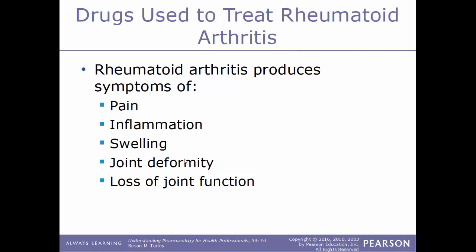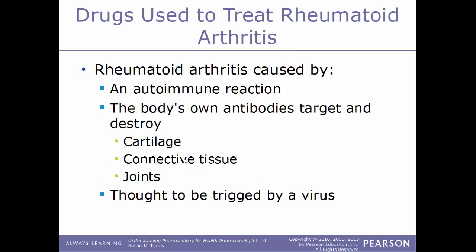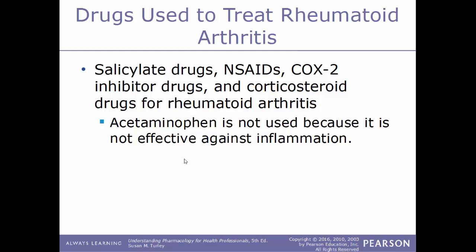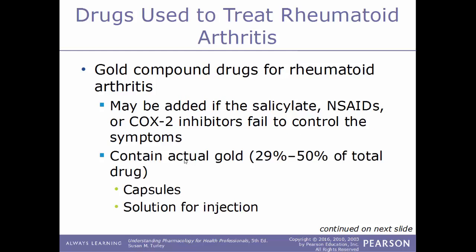Now we'll move into drugs used to treat rheumatoid arthritis (RA). RA produces symptoms such as pain, inflammation, swelling, joint deformity — particularly in the hands — and loss of joint function. Rheumatoid arthritis is an autoimmune condition in which the body's own antibodies target and destroy cartilage and connective tissue in the joints; it is thought to be triggered by a virus. Drugs used to treat RA include salicylates, NSAIDs, COX-2 inhibitors, and corticosteroids — many of the same drugs used for osteoarthritis. Acetaminophen is not used because it is not effective against inflammation.